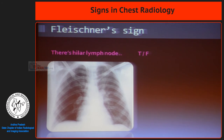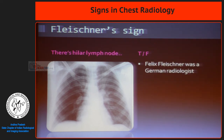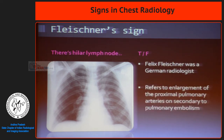Oligemia. That lung is anemic — it has no blood in it, because the entire blood supply is obstructed by the massive thrombus in the pulmonary artery. That is why this area is translucent. What is the sign called?